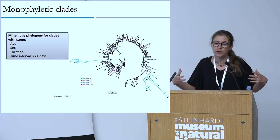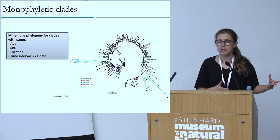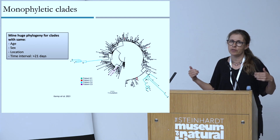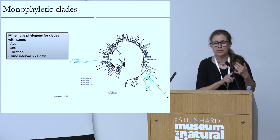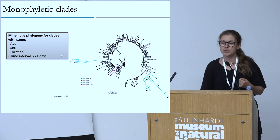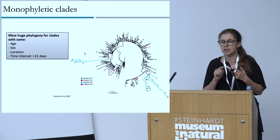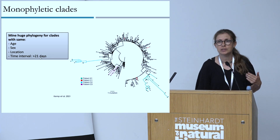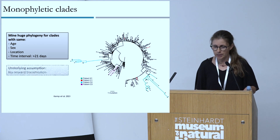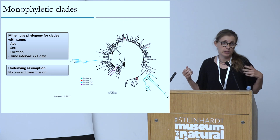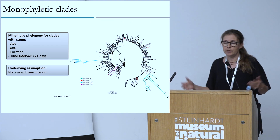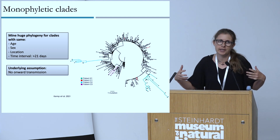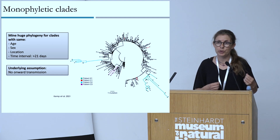We are mining a huge phylogeny of almost 12 million sequences, looking for clusters of sequences from what is likely the same individual. Unfortunately, we don't have explicit labels identifying chronically infected individuals — when people upload their data it is de-identified. The only data we have is sequence, age, sex, and location down to the city level. We look for clusters with the same age, same sex, same location, and a time interval of more than 21 days — our criterion for defining a chronic infection. There are likely many cases we miss due to sequencing errors, but we believe what we capture is real.